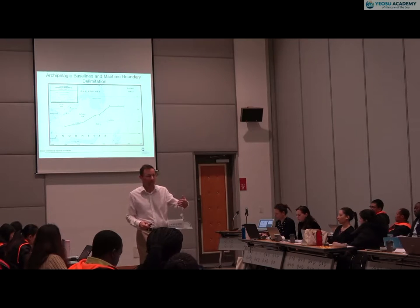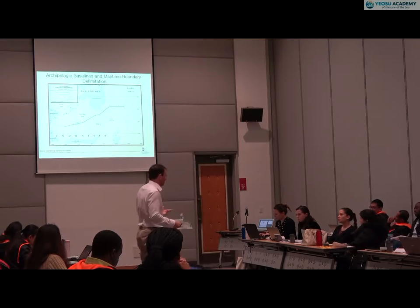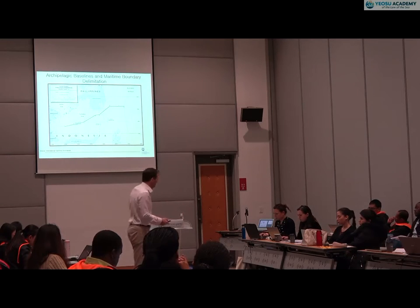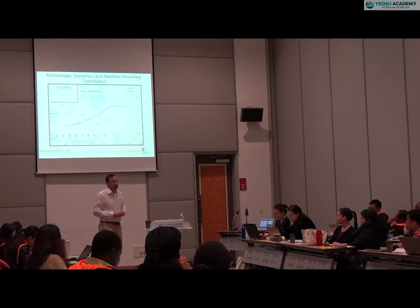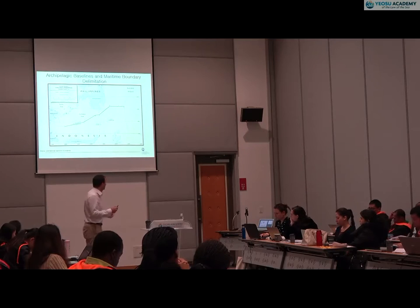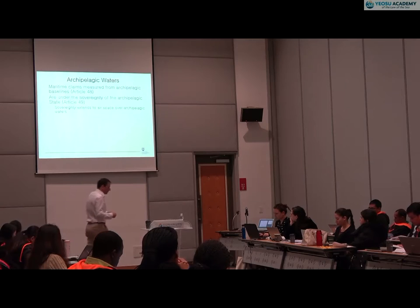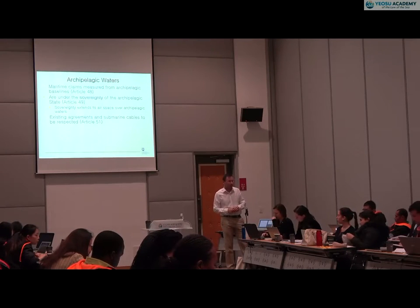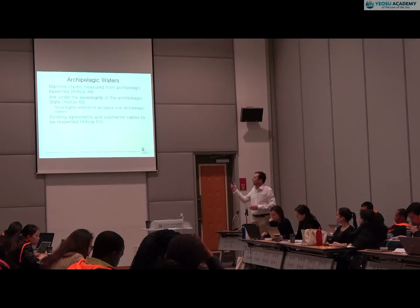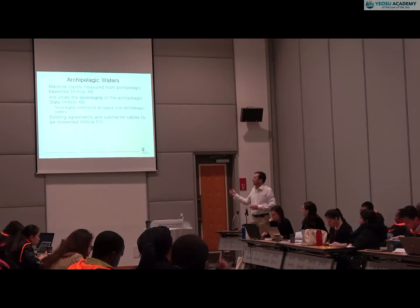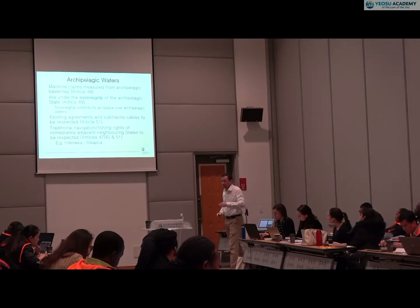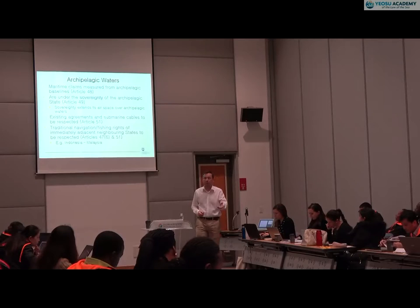Indonesia has been keen in recent delimitations — 2009, and the 2014 delimitation with Singapore — for its archipelagic baselines to have an influence on the location of the boundary line with Singapore. Singapore agreed, though there wasn't really that much at stake because we're only talking about a very narrow body of water between Singapore and the Indonesian archipelago. Archipelagic waters within defined archipelagic baselines are under the sovereignty of the coastal state, rather than merely sovereign rights.